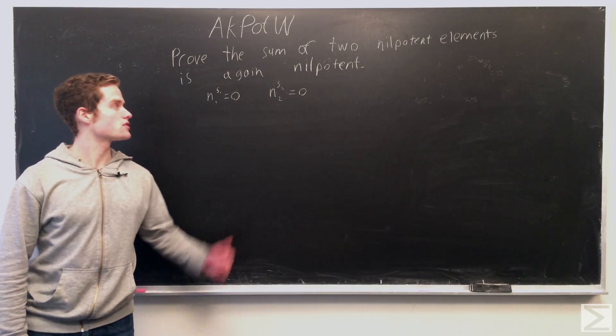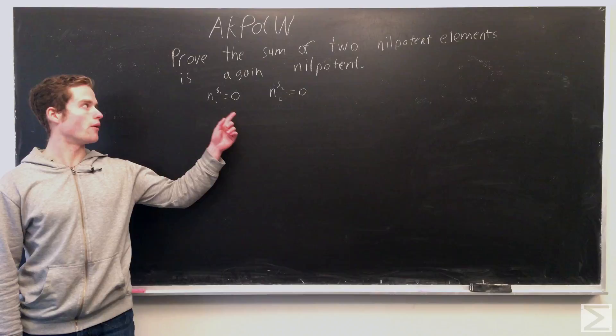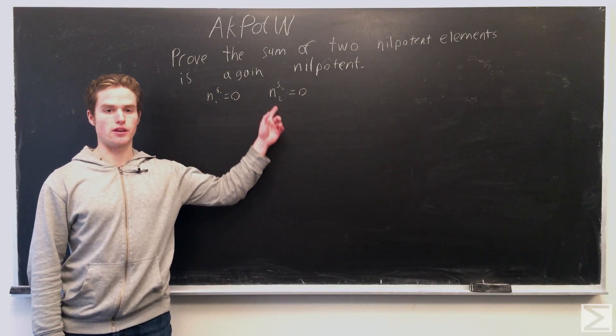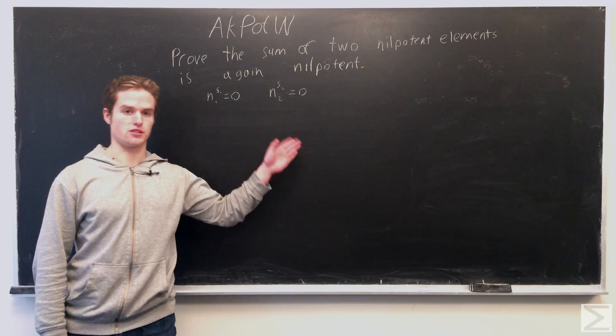So to prove this, first, with what we know, we know there's some n1 to the s1 equals zero in this commutative ring, and n2 to the s2 equals zero in this commutative ring.